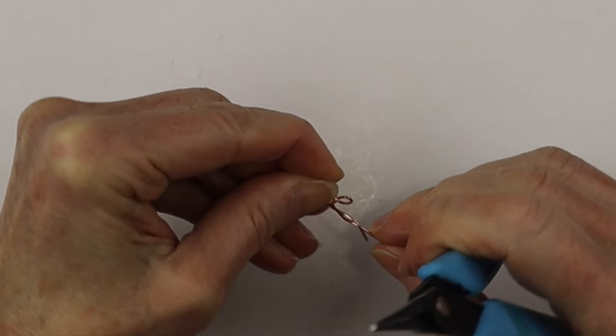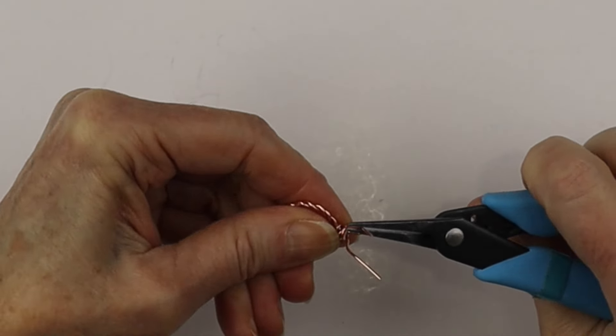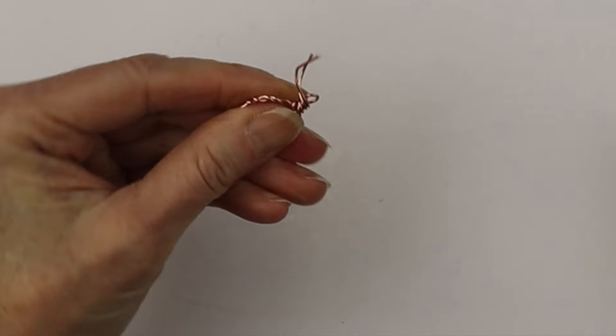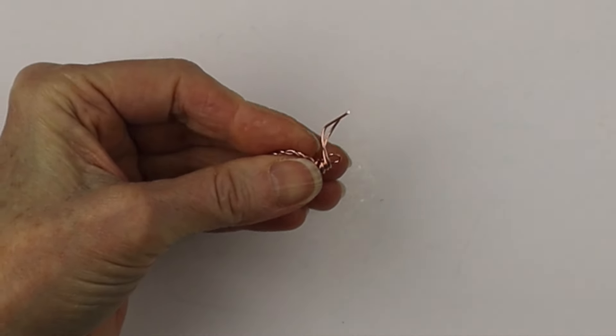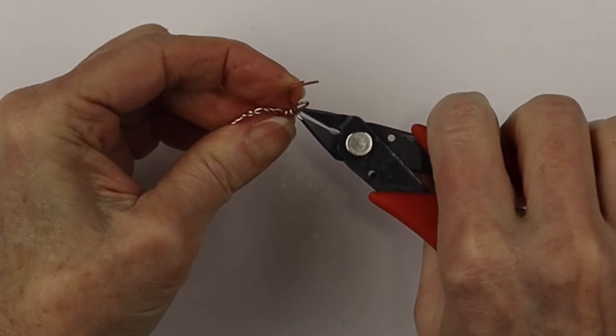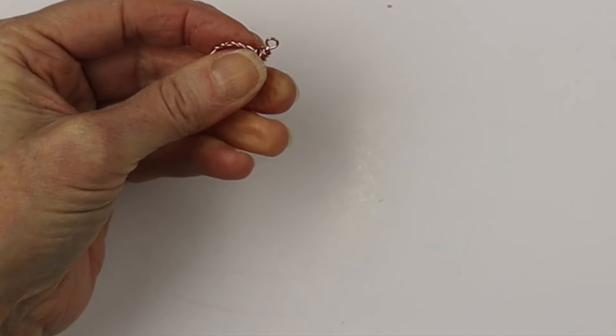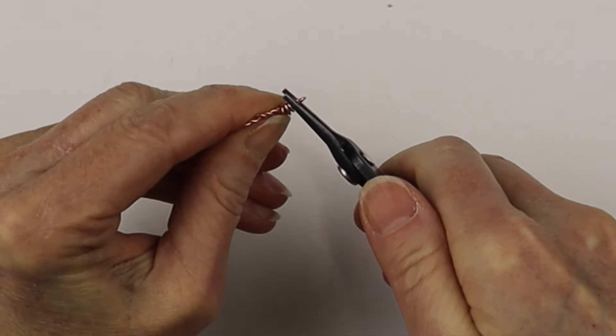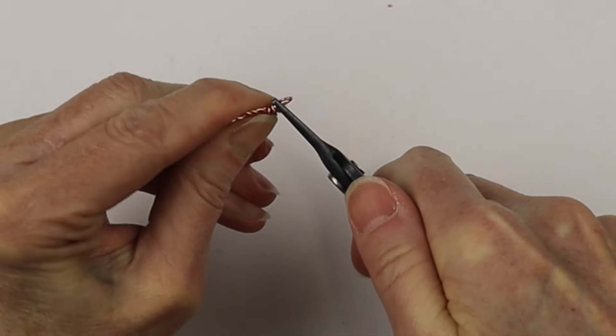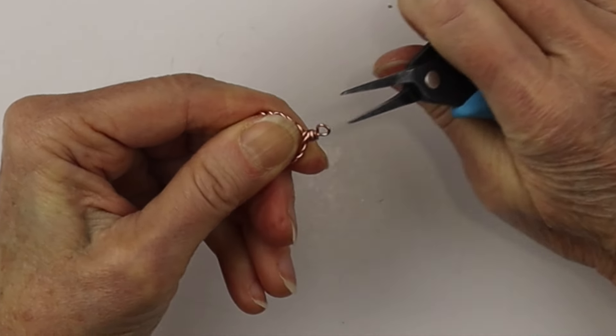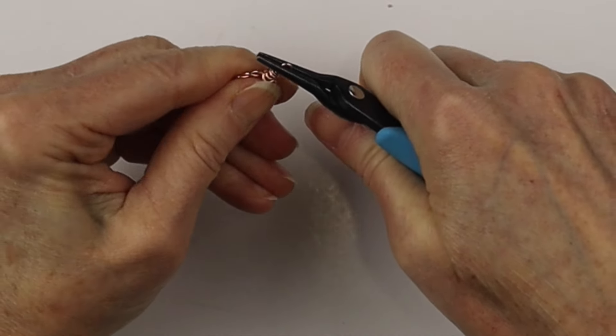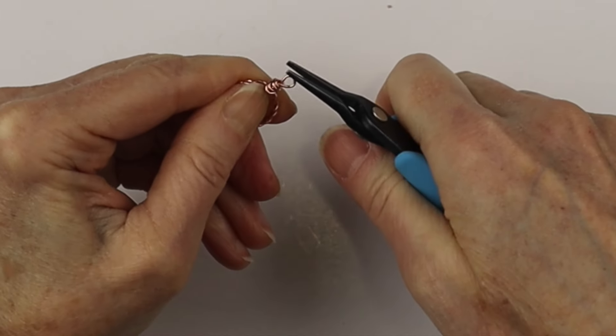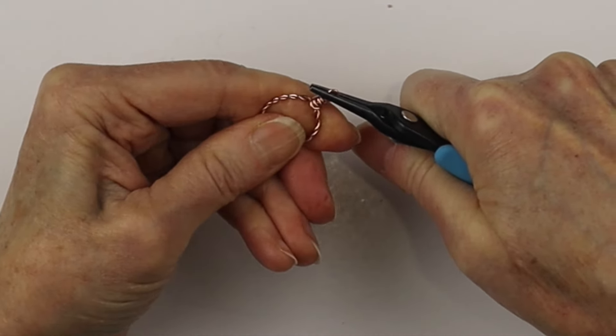And then we're going to clip them with our flush cutters. These are the Xeron micro shear flush cutters. And then with the Xeron tweezers nose pliers I'm going to pinch in those ends so there's no little pokey ends in there. So just keep adjusting it till it's nice and straight and the ends are tucked in.